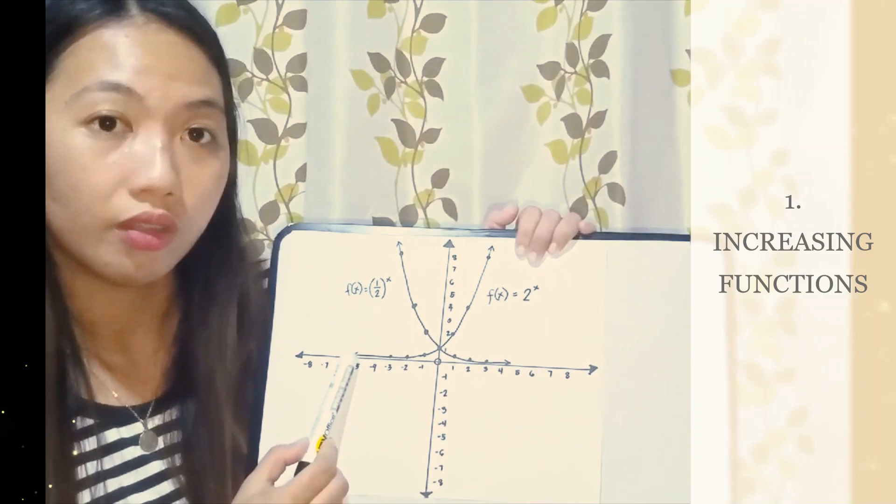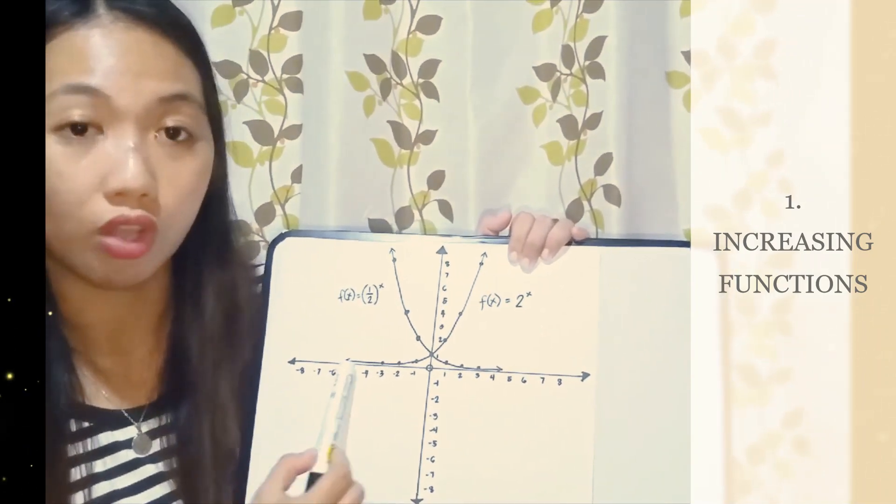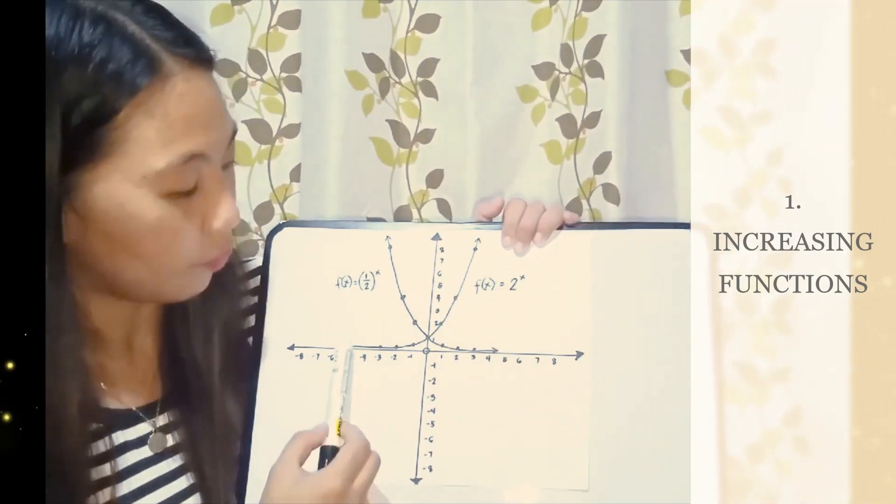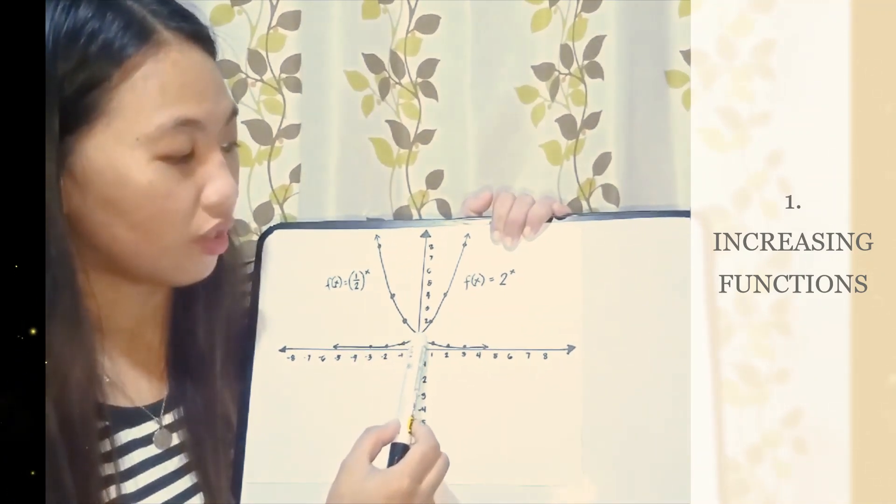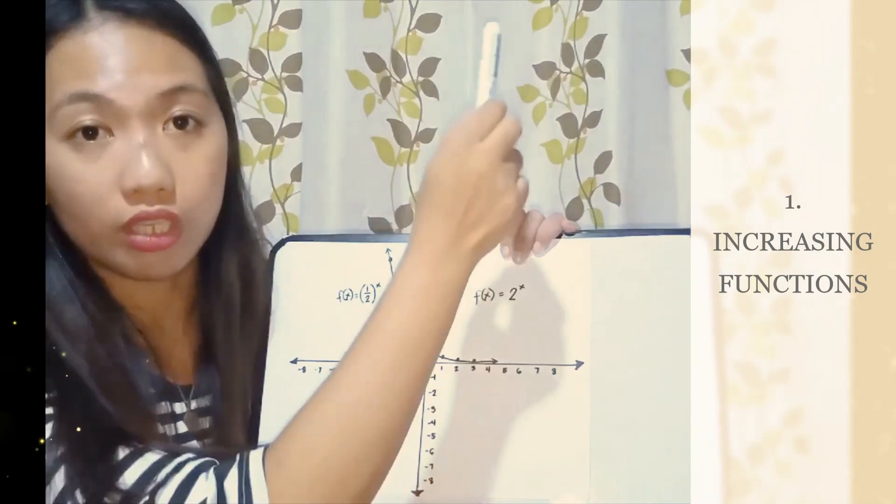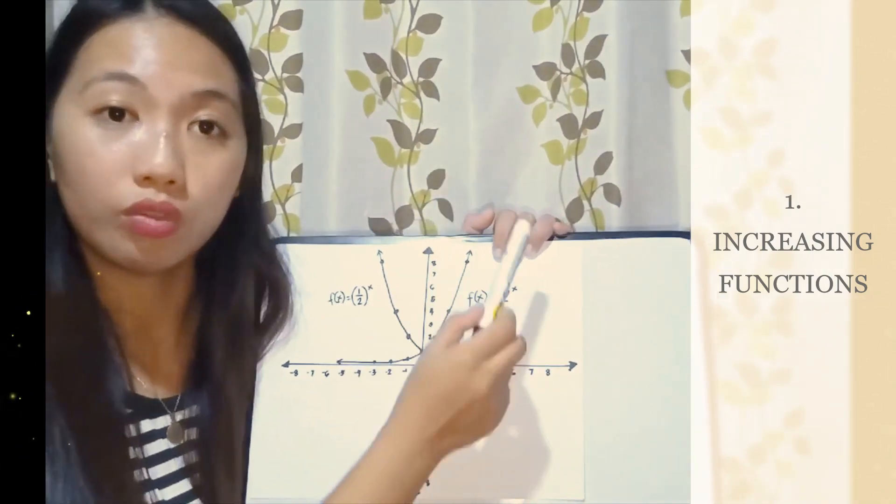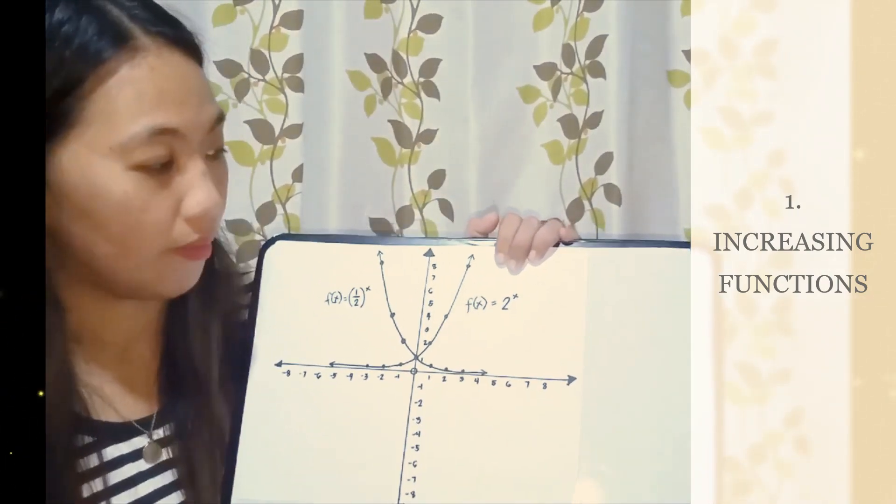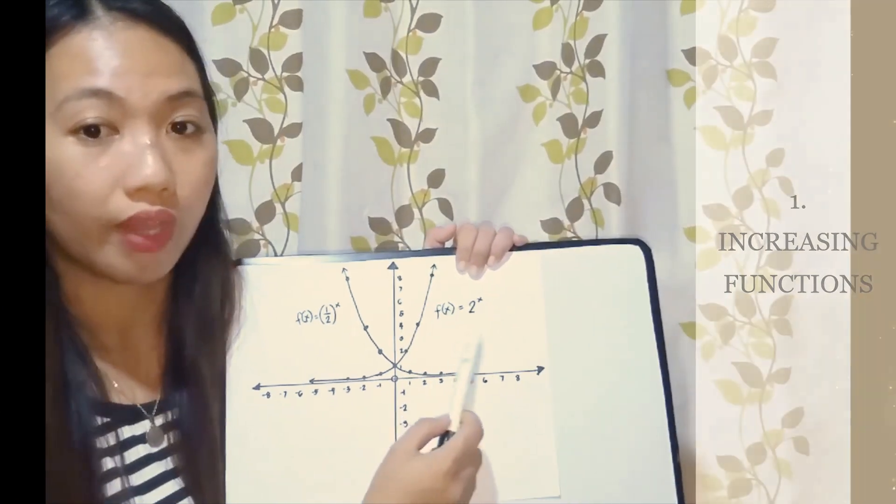From here, from the lowest negative numbers up to the highest, increasing and increasing going up, up to infinity. This is the increasing function.